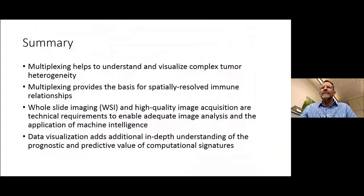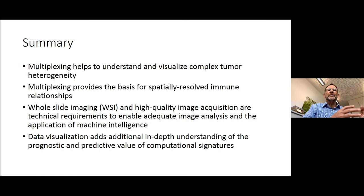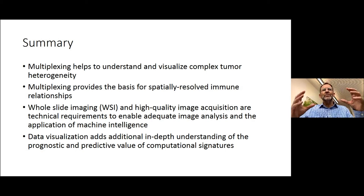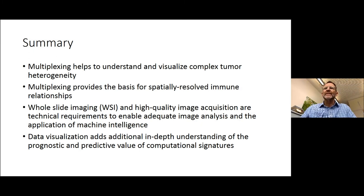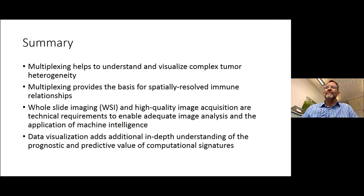In summary, multiplexing helps to understand and visualize complex tumor heterogeneity, which exists in essentially each and every tumor — with differences across tumor types and origins, and depending on different lines of treatment. Multiplexing provides the basis for spatially resolved immune relationships, which are very important for making the right treatment selections and statements about prognosis. But it also requires understanding the entire tumor, not only looking at little areas. Whole slide imaging and high quality image acquisition are technical requirements to enable adequate image analysis and the application of machine intelligence. Data visualization adds additional in-depth understanding of the prognostic and predictive value of computational signatures.